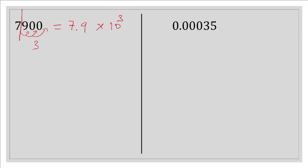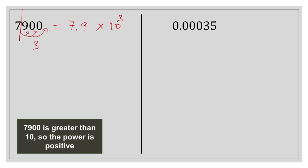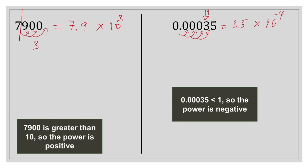What we notice is that this number is greater than 10, which is why the power is positive. On the other side, we identify the first digit different from 0. We move the decimal point 1, 2, 3, and 4 places, giving us 3.5 times 10 to the power of minus 4. The power is negative because this number is less than 1.